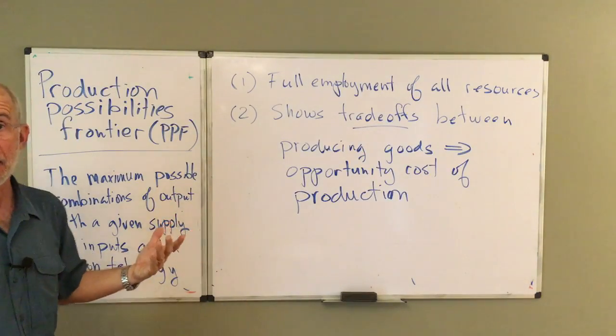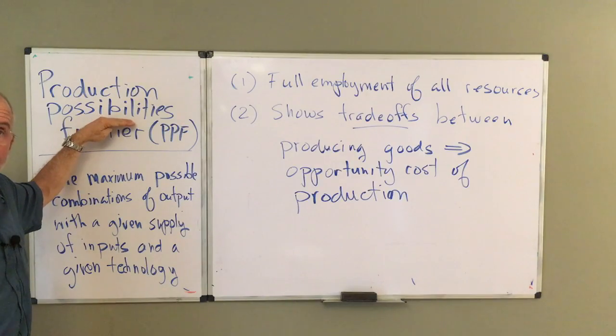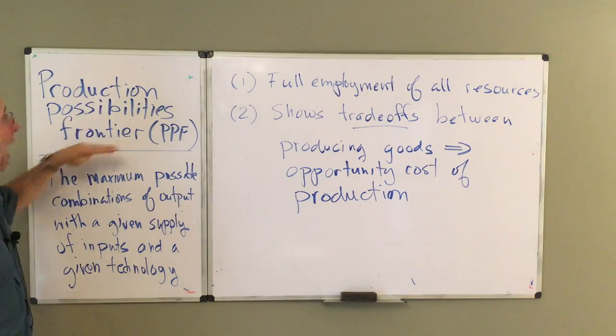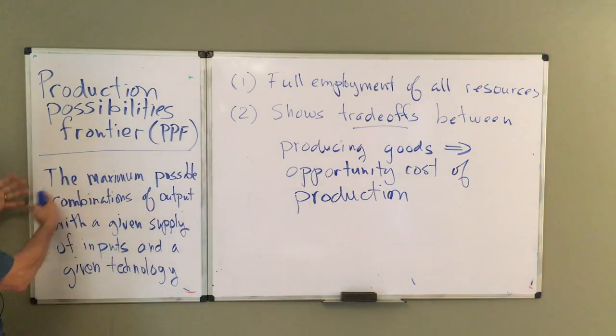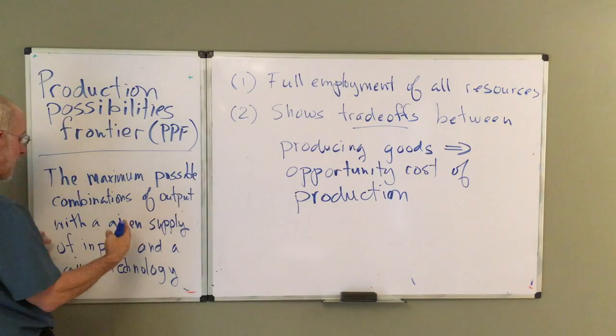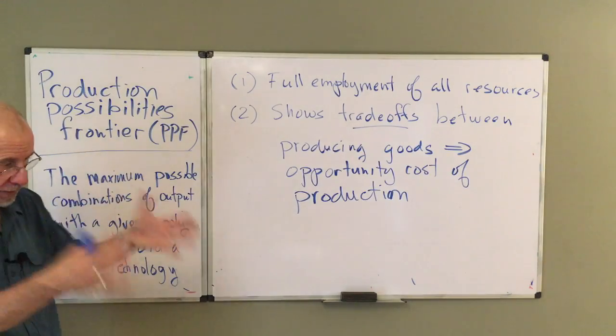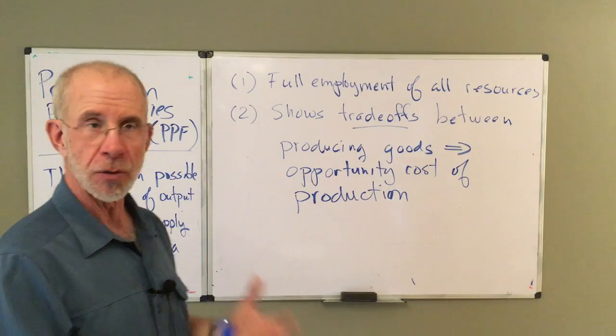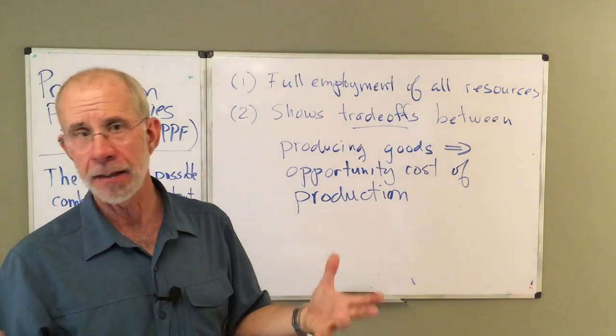And really everything is in the name. It's talking about the possibilities, what you can possibly produce, what you can possibly produce at the frontier, at the maximum. So it is the maximum possible combinations of output with a given supply of inputs and a given technology. You give me your technical capabilities.